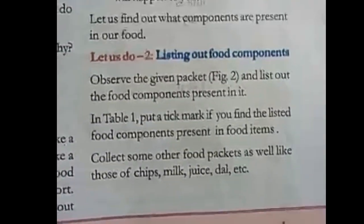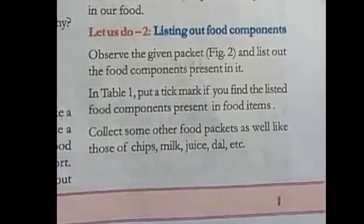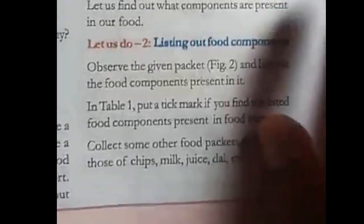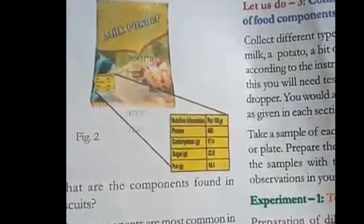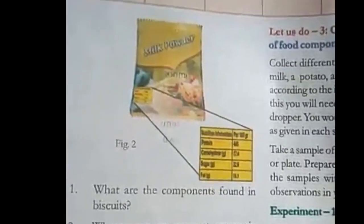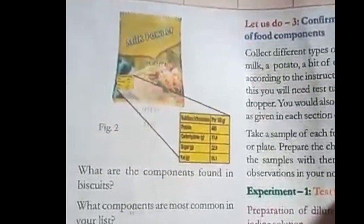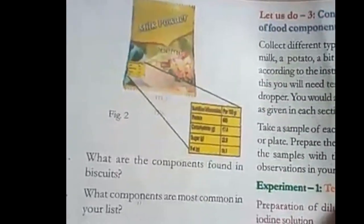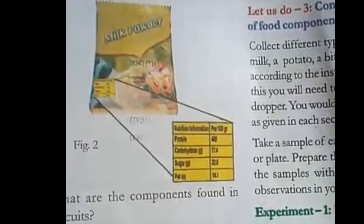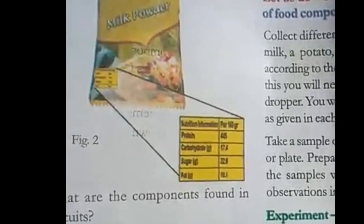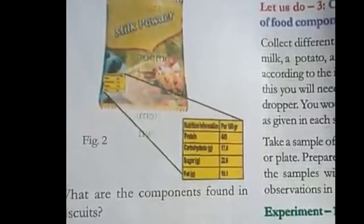Activity: listing out food components. Every food consists of food components. In our daily life there are many food packets — collect some food packets like those of chips, milk, juice, daal, etc. Observe them. For example, here is a milk powder packet. On the backside there is a nutrition information table showing what components are in it.